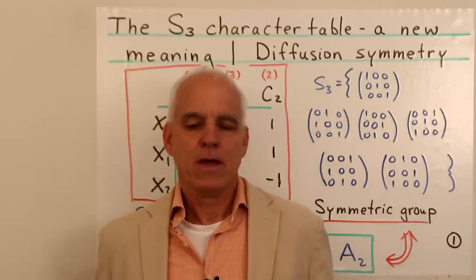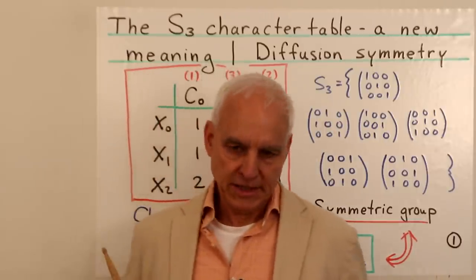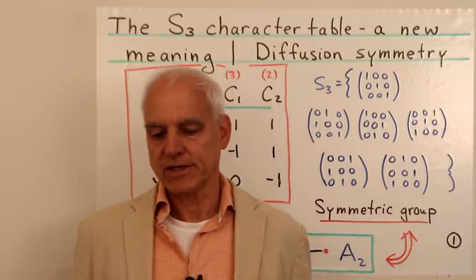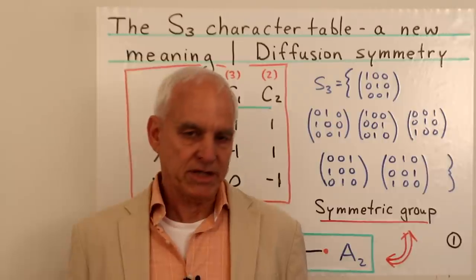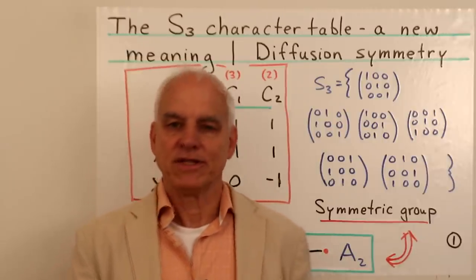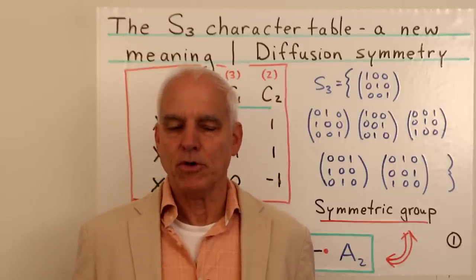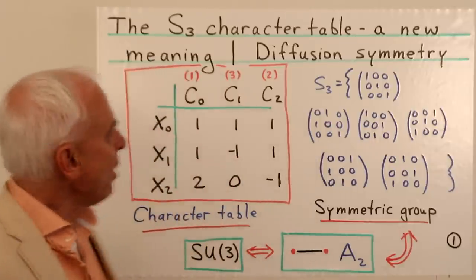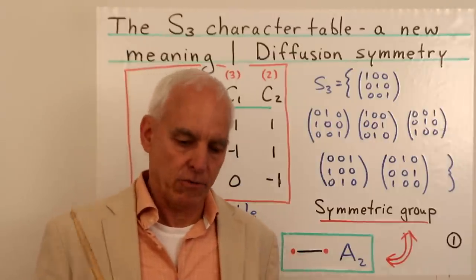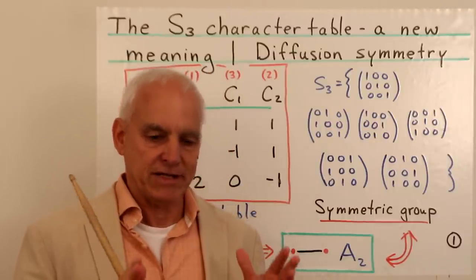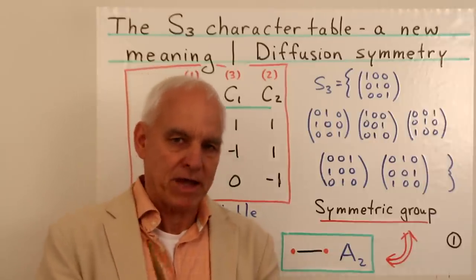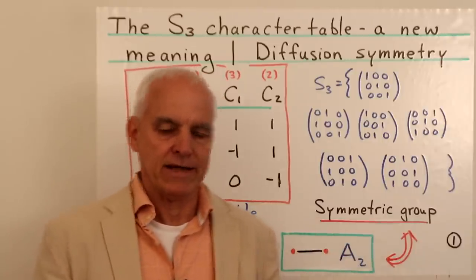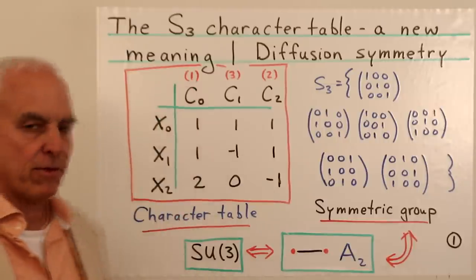Hello everyone, I'm Norman Wildberger. Today we're going to carry on with introducing diffusion symmetry as a possible large-scale alternative to thinking about symmetry in mathematics and physics. This is part of a series of lectures that I hope will be particularly interesting to physicists, as I hope to get towards aspects of the standard model and give you some new alternative mathematical tools. Today I want to talk about character tables of finite groups, illustrated with a specific example. We look at the symmetric group S3 and its character table.